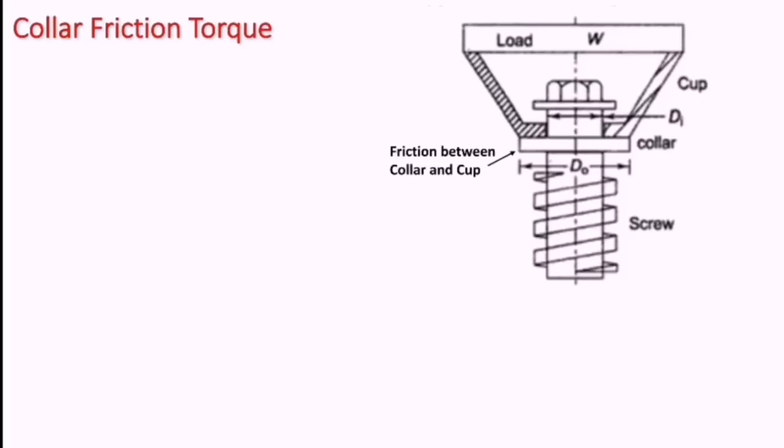While deriving the expression of efficiency of the power screw, we have seen the limitation that it does not take into account the other friction losses. That other friction loss is nothing but the friction between the collar and the cup, as shown in the diagram. The torque required to overcome this friction is not considered while deriving the expression. Now let us see what will be the torque required to overcome the friction between the collar and the cup.